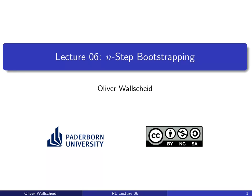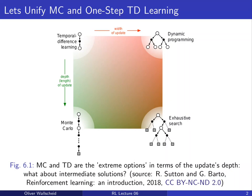Welcome to the sixth lecture of the course Reinforcement Learning at Paderborn University. My name is Oliver Wallschert and today we are going to investigate so-called n-step bootstrapping methods. This can be summarized with a diagram depicting the different width and depth situations of learning in reinforcement learning contexts, and especially today we will deal with different options in terms of the depth of the reinforcement learning update.